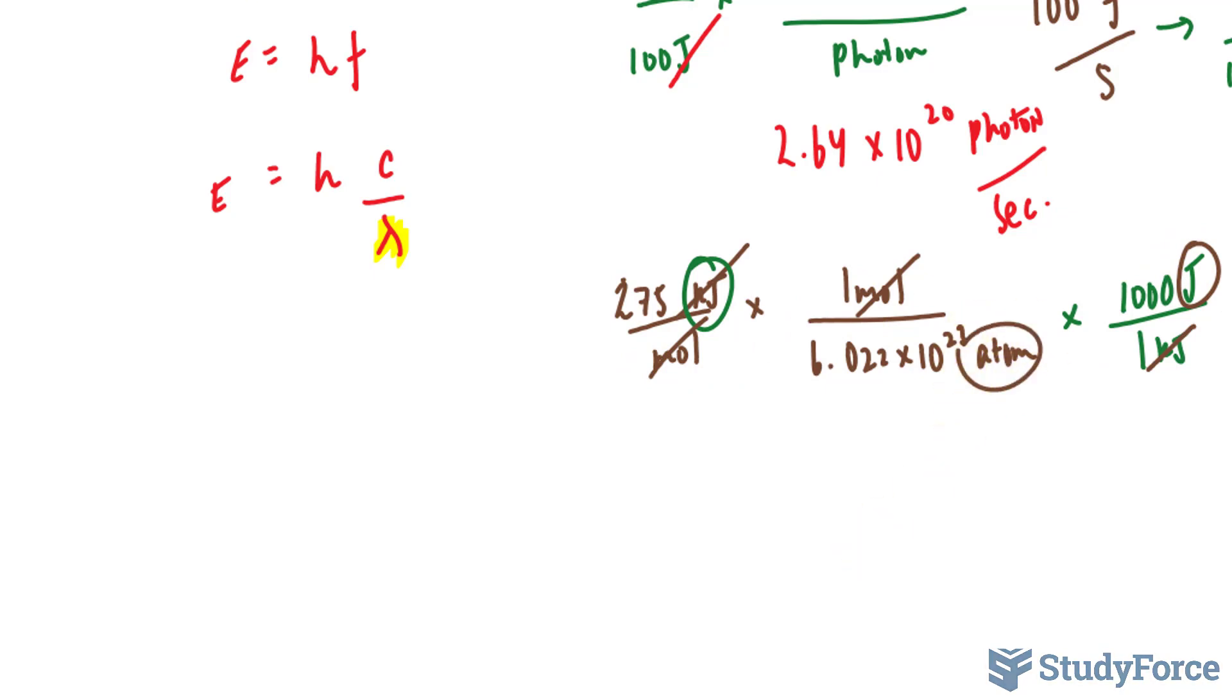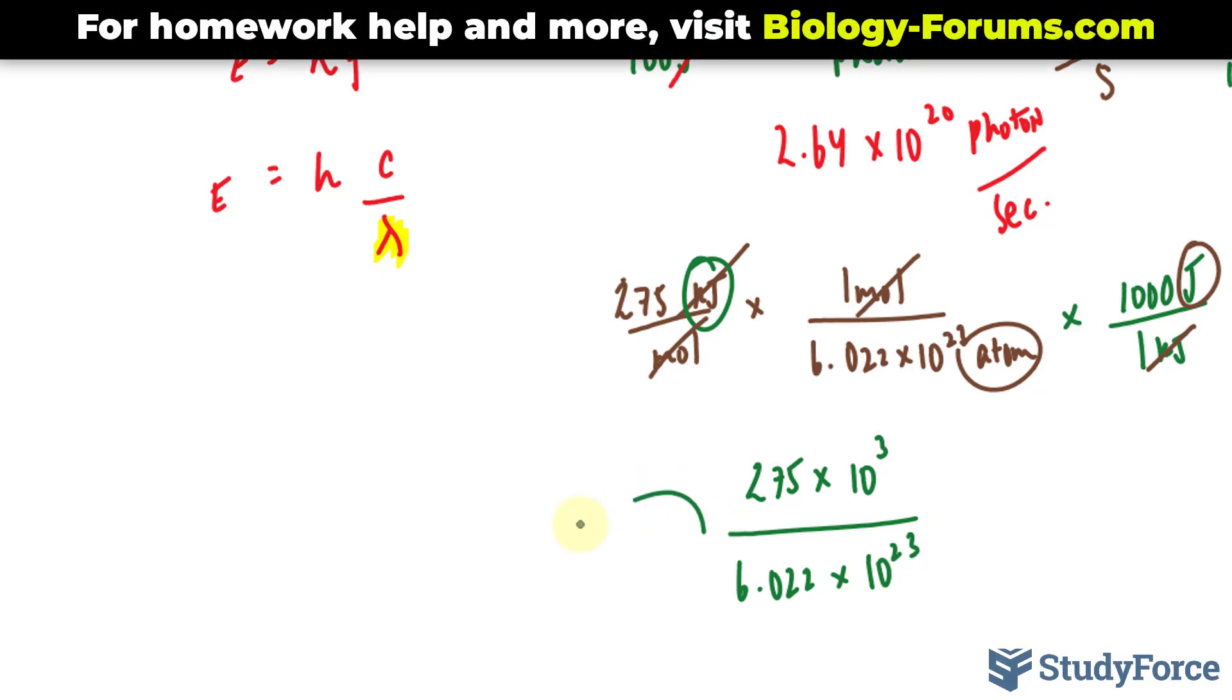So let's go ahead and multiply this. We have 275 times 10 to the power of 3 per 6.022 times 10 to the power of 23. I'm going to keep it this way and substitute this right into where I see my E.